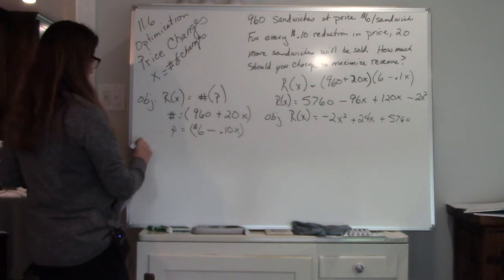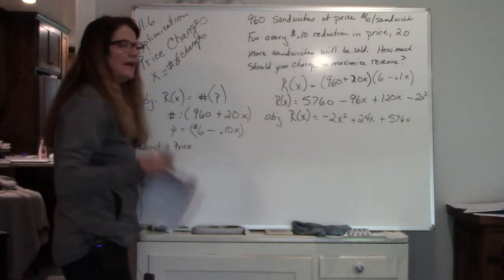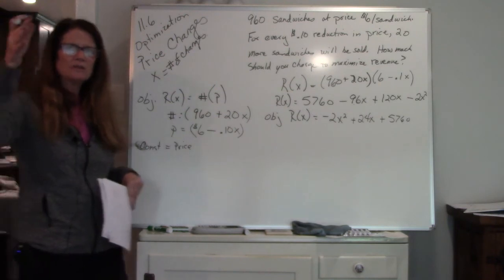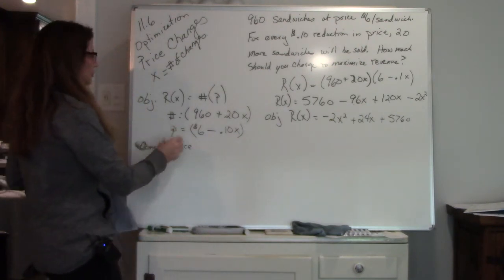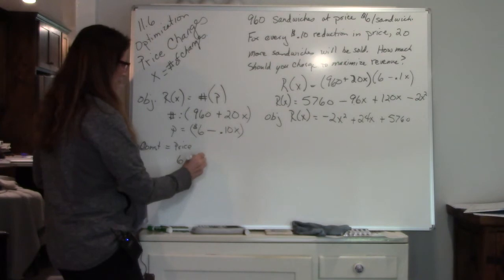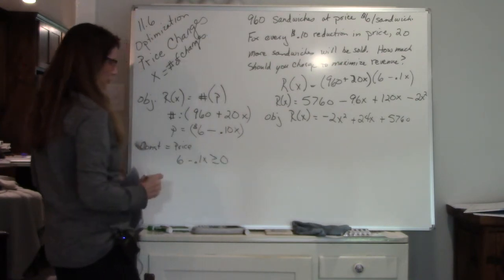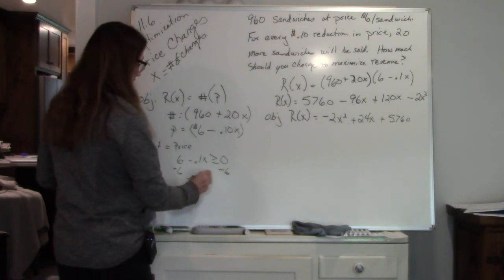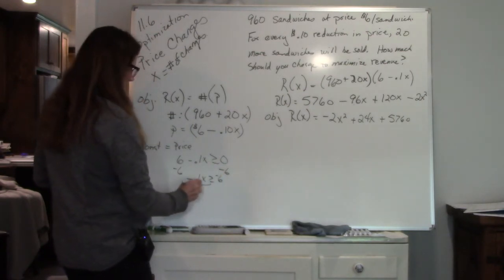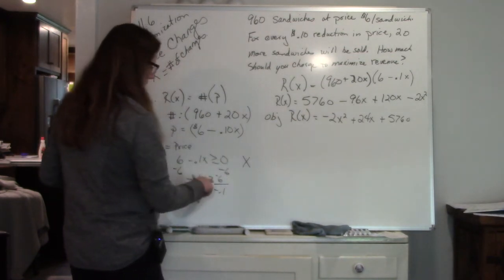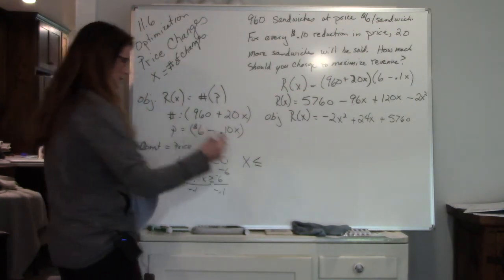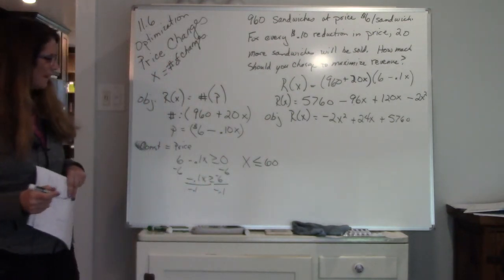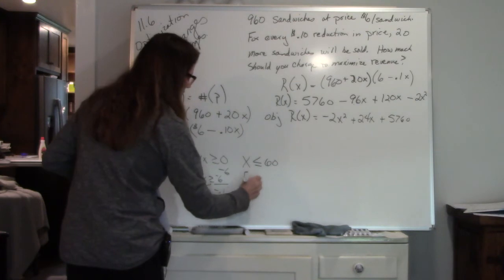So with price change, our constraint is the price. That's what's going to limit us. If I charge too much, no one's going to buy it. If I charge too little, I'm not going to make enough money. So the price is always going to be your constraint when it comes to the price change equations. So we're going to set that to greater than or equal to 0. Subtract 6. Divide by negative 0.1. And I get x, and remember to flip your sign, is less than or equal to 60. So my endpoints are 0 to 60.